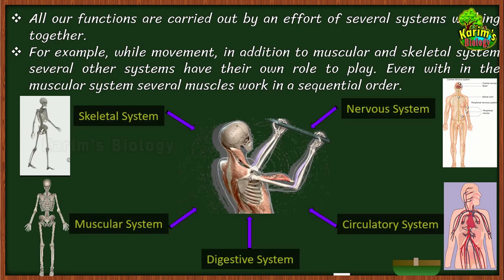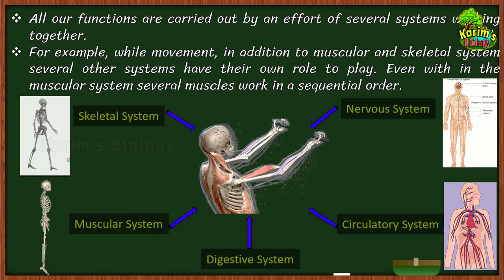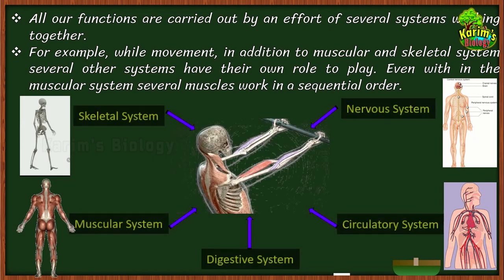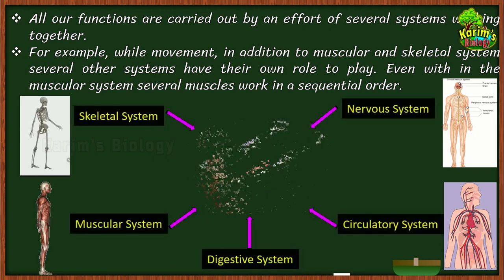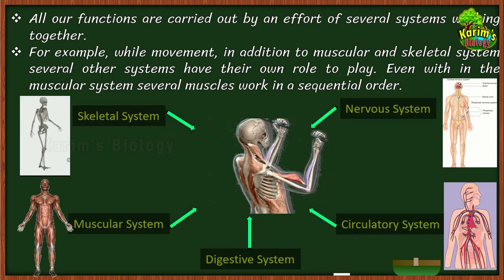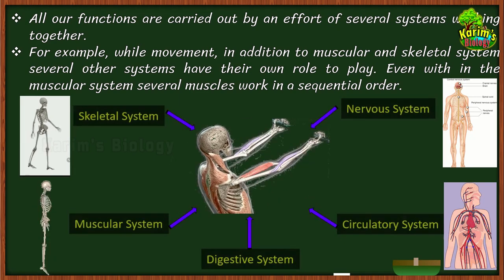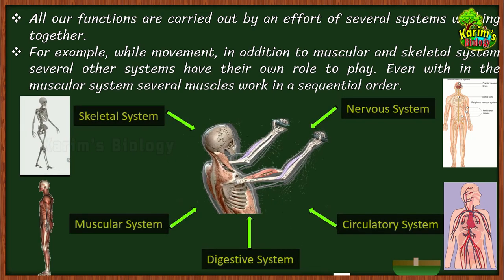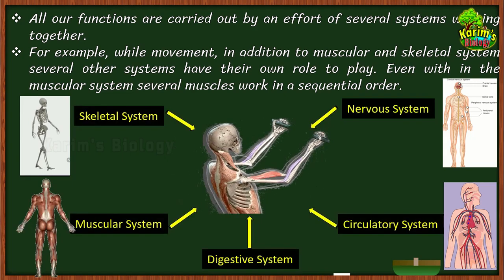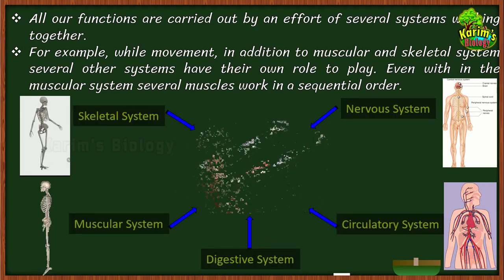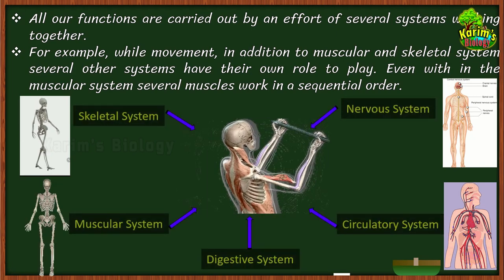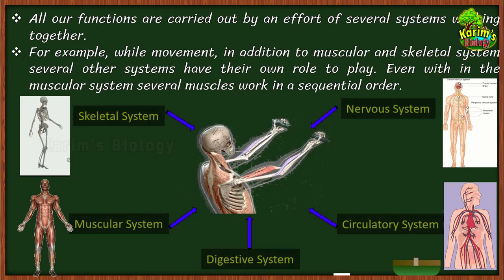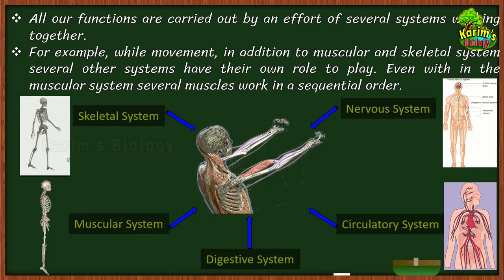Without the circulatory system it would not be possible for muscles to get energy. So the skeletal system, muscular system, digestive system, and circulatory system all work in a coordinated manner — along with the respiratory system and several other systems. For all these systems to work in a coordinated manner, there is another system taking care of it: the nervous system, made up of nerve cells, which helps bring about coordination in different body systems.